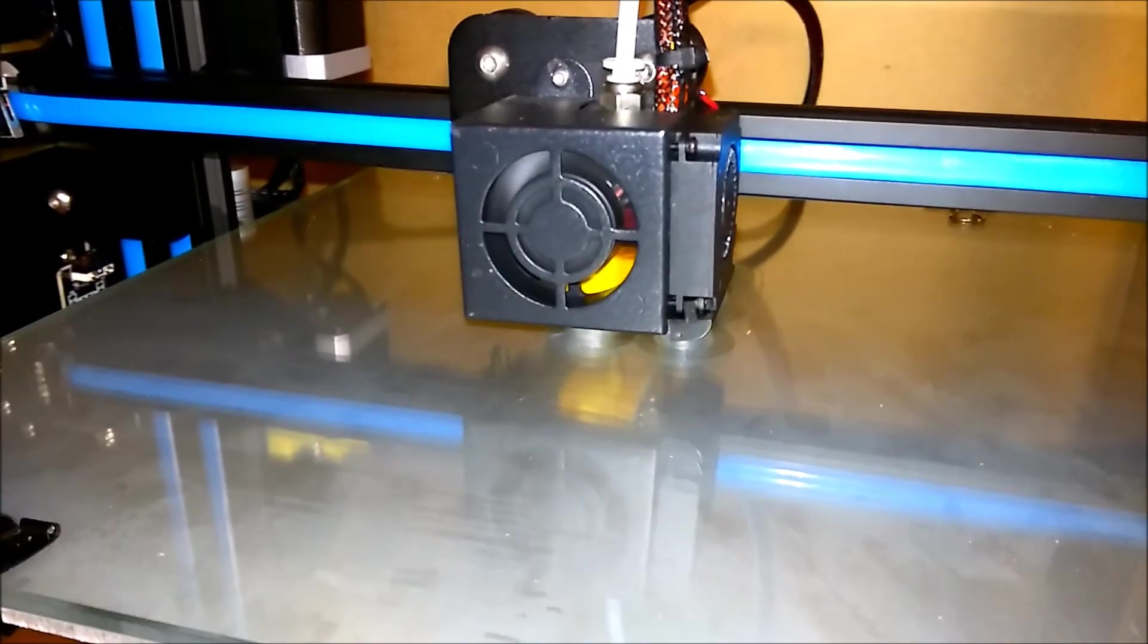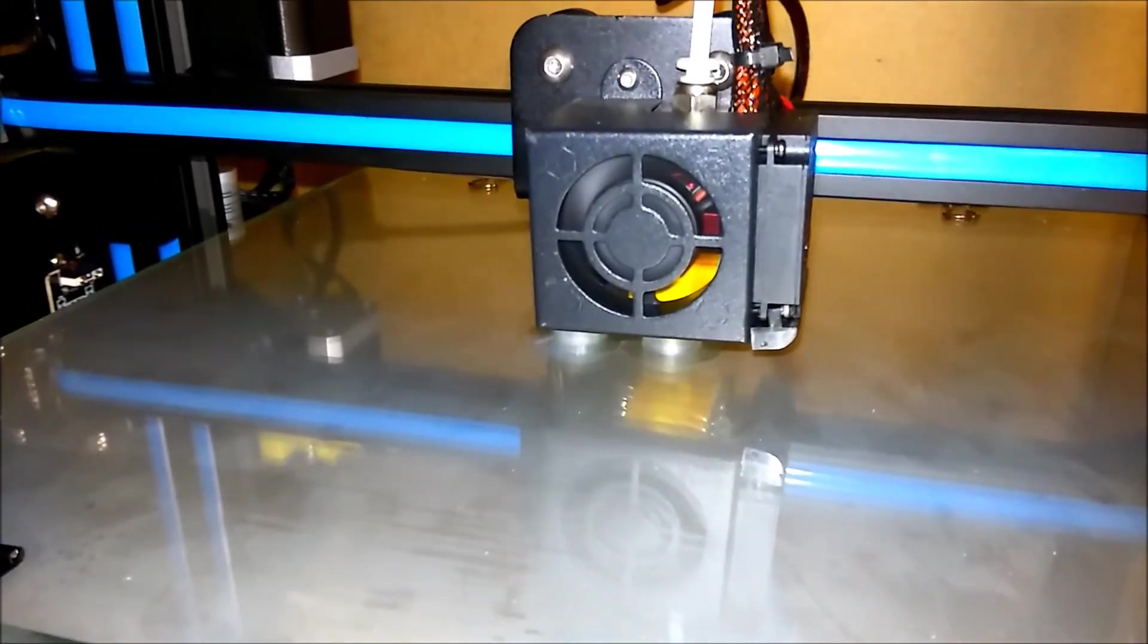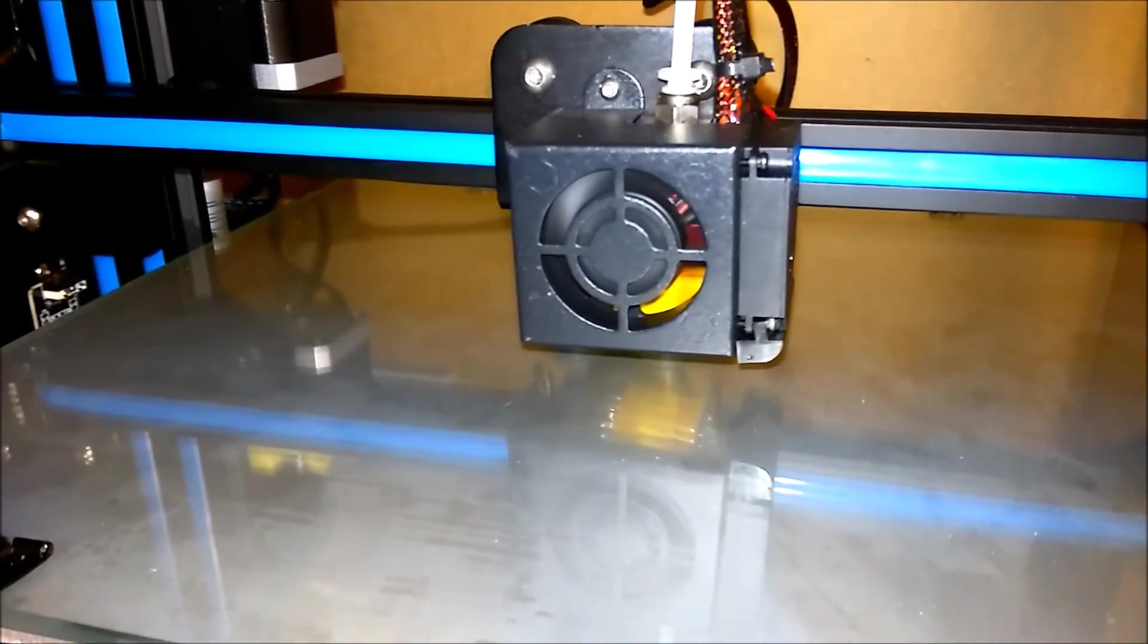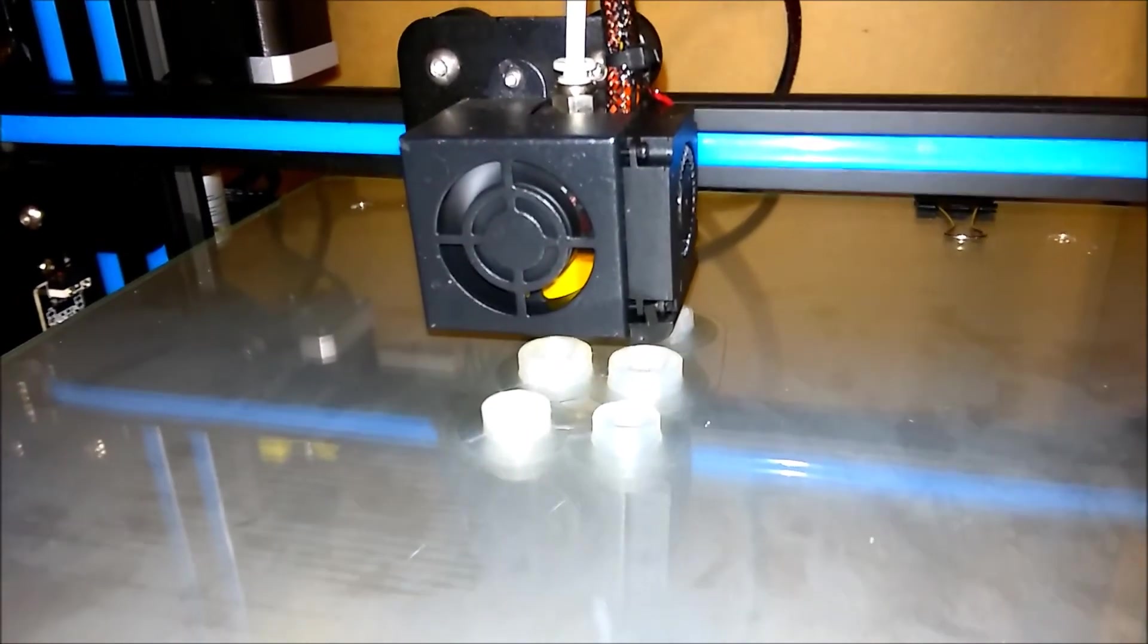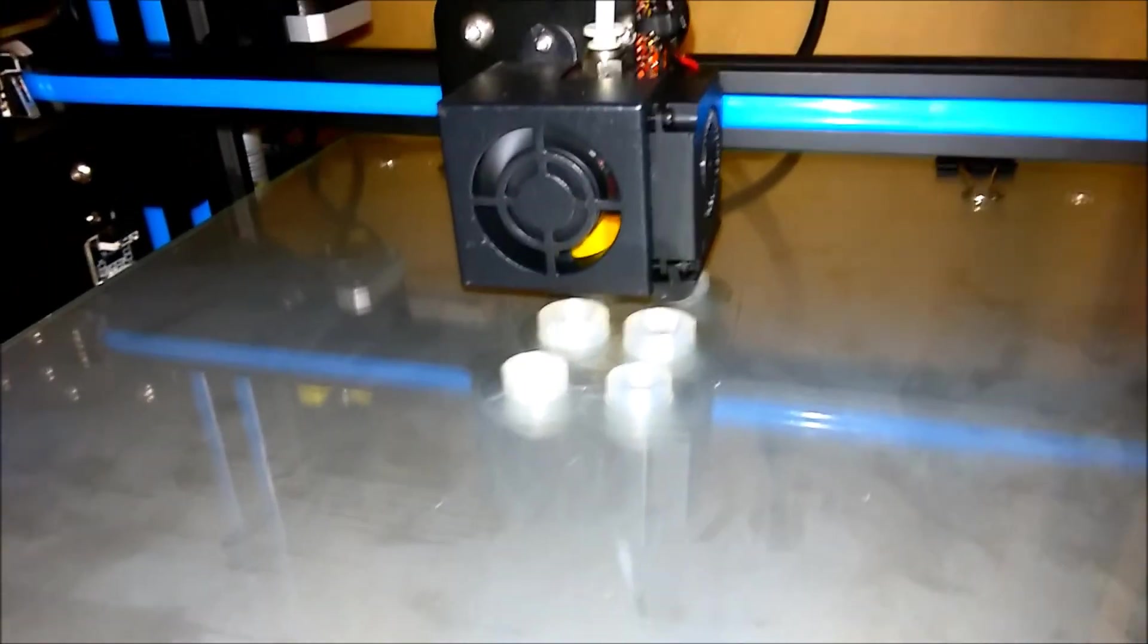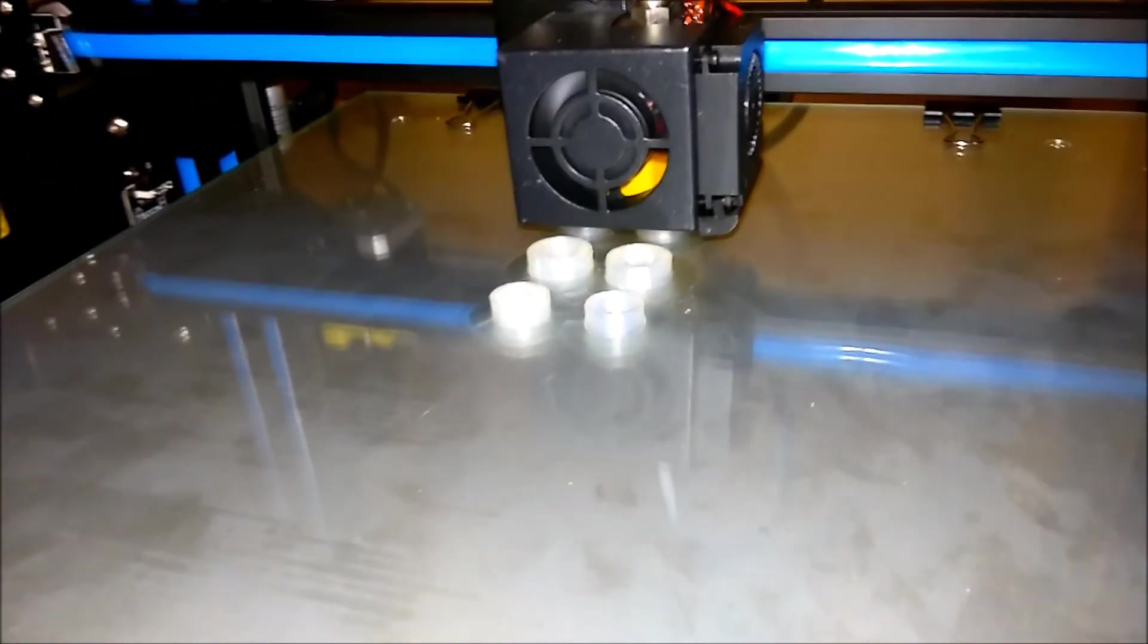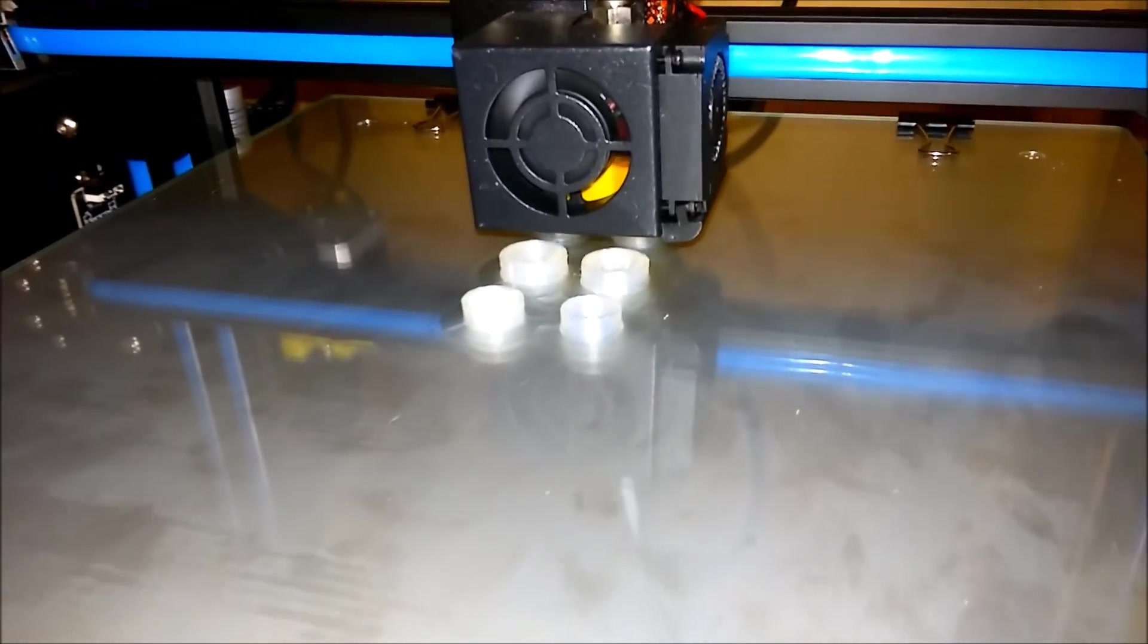So here I'm printing the index finger for the third time. The last one was printing really well until about halfway through the two middle pieces came unstuck from the bed. So that was quite unfortunate. The settings I changed on this print, I've increased the brim. I had a 5mm brim on the first print and then on this one I've increased it to 7mm.